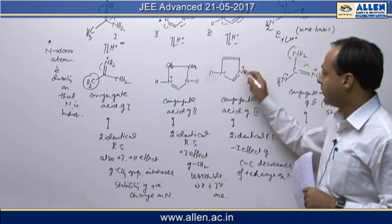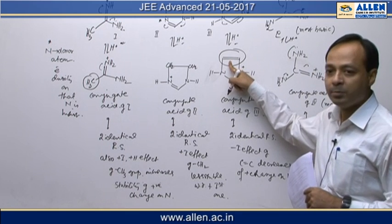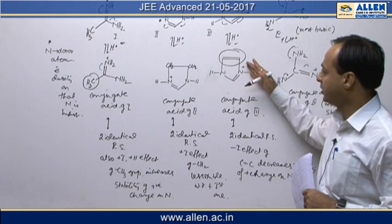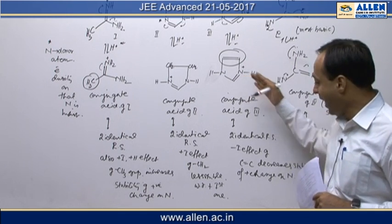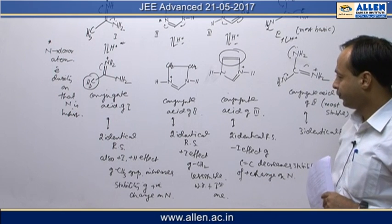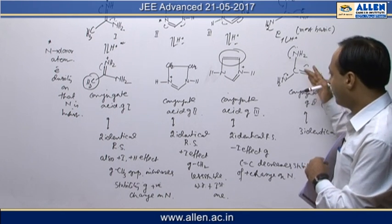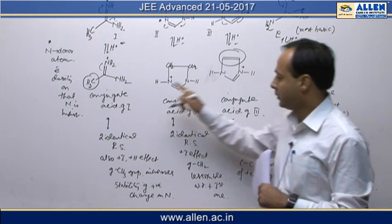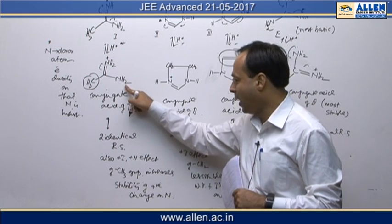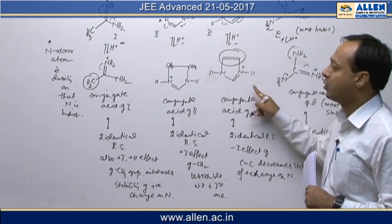And here, the double bonded system, double bonded system being minus I effect, it decreases the positive charge of nitrogen and here, its conjugate acid is least stable. So the 4 to 1, after 4 to 1, the order should be, stability order should be 1, conjugate acid, 2, conjugate acid, 3, conjugate acid.